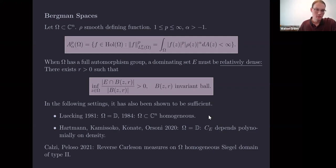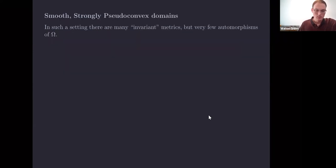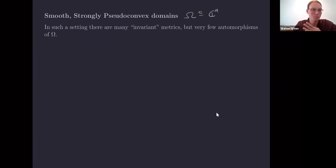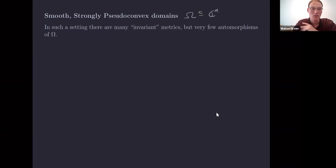We are going to study this outside the group structure setting — on smooth strongly pseudo-convex domains in C^n, where there is very little to no automorphic structure. In this setting there are many potential invariant metrics: the Kobayashi metric, the Bergman metric, the Carathéodory metric. Since there are no automorphisms, we cannot just pick one ball and map it around the domain using automorphisms.